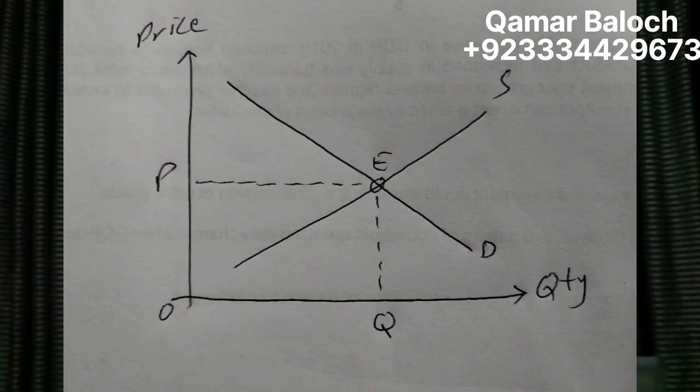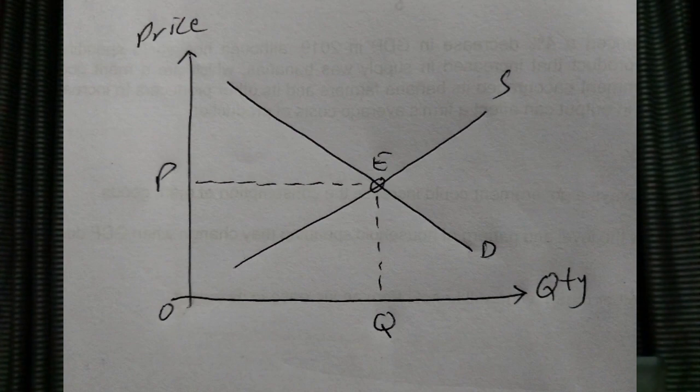As per this graph showing on the screen, equilibrium is initially at point E where demand D and supply S intersect each other. Price is shown on the Y-axis and quantity on the X-axis. Price is set at P and quantity is set at Q. This is how the price mechanism decides what the price in the market should be and what quantity will be sold to consumers.